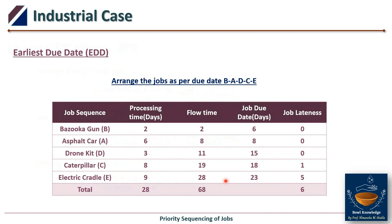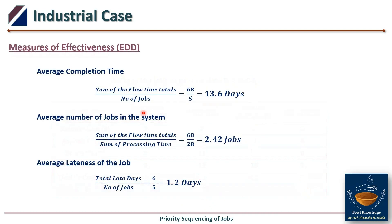Next is Earliest Due Date (EDD). The due date column is arranged in ascending order, giving sequence B, A, D, C, E. Flow times and lateness are calculated accordingly. Flow time total = 68, lateness total = 6. Measures of effectiveness: average completion time = 68÷5 = 13.6 days; average jobs in system = 68÷28 = 2.42; average lateness = 6÷5 = 1.2 days.